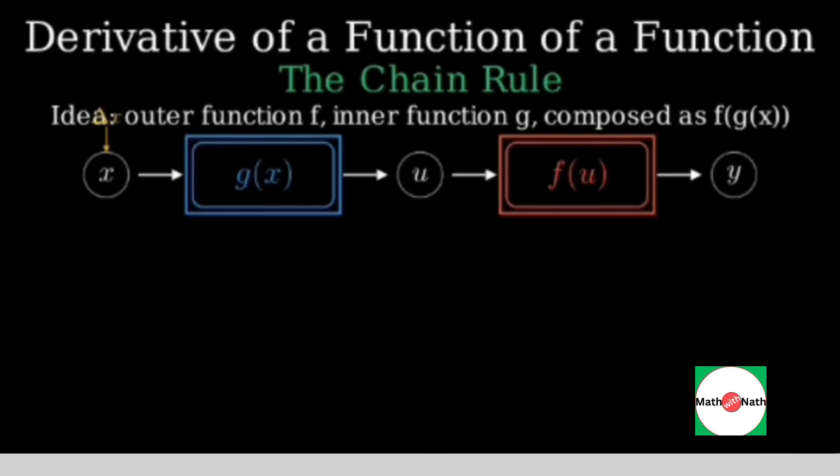Now imagine a tiny change in x. That change is multiplied by the rate of change of g at x to produce a tiny change in u. We call that g prime of x. Then that tiny change in u is multiplied by the rate of change of f at u to produce a tiny change in y. We call that f prime of u. This is the idea behind the chain rule.